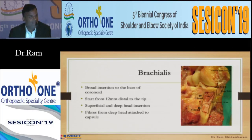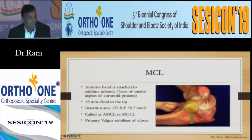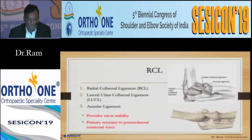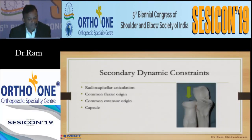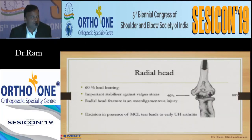The capsule is attached 6 mm distal to the coronoid tip, so if you see a very tip fracture, you don't need to worry. The brachialis insertion is further beyond with the capsule. The MCL is attached to the sublime tubercle, or what is called the anteromedial tubercle of the coronoid facet — if that is fractured, you have to fix it. The lateral collateral ligament is a triangular configuration combining the radial collateral ligament, LUCL connecting the humerus and ulna, and the annular ligament. The radial head as a secondary dynamic constraint contributes to 60% of weight bearing of the elbow.